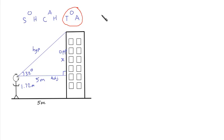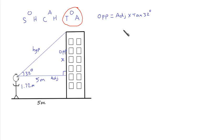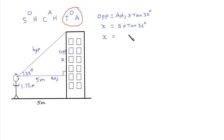We're trying to find the opposite, so from the formula triangle, the opposite equals the adjacent multiplied by the tan of the angle. So the opposite equals the adjacent multiplied by tan of 32 degrees. Substituting in our values: X equals 5 multiplied by tan 32. At this stage, we're going to find X and we need to use a calculator to do this.